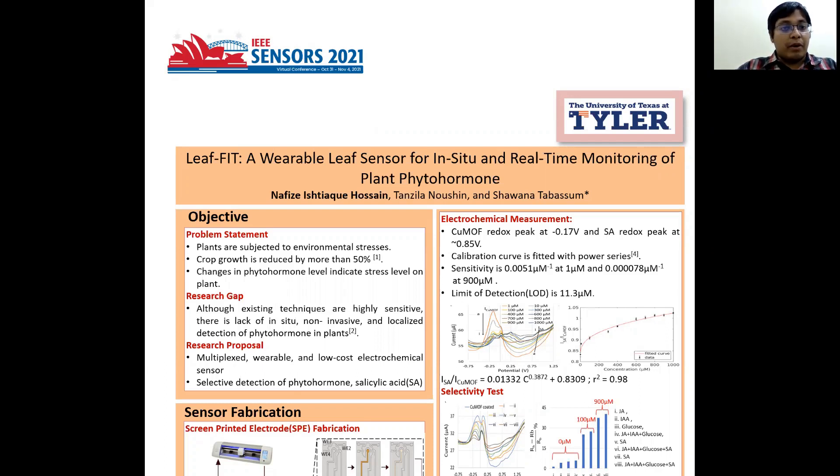Plants are subjected to a broad set of environmental distress such as drought and salinity, which causes substantial loss of productivity of crops. Phytohormones such as salicylic acid, jasmonic acid, and abscessic acid level trend to change according to the stress level of plants. Thus, real-time and in-situ monitoring of these phytohormones will facilitate the early identification of crop stress.